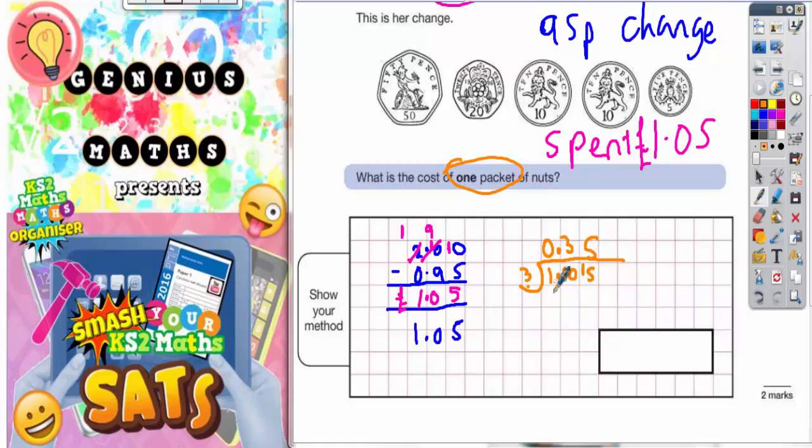But remember, this one pound five was in pounds, so 0.35 is also in pounds. In your answer box, you can either write £0.35 with a pound sign, or obviously this means 35 pence, so you could write 35p. Let's make sure we get that nice and neat. So £0.35 or 35p basically means the same thing.